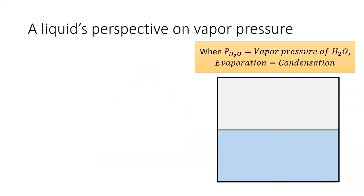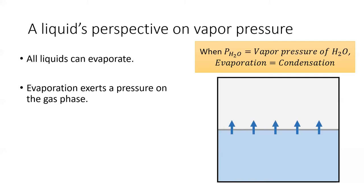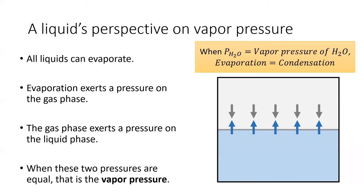From the liquid's perspective, all liquids can evaporate. Evaporation exerts a pressure on the gas phase. In turn, the evaporated gas molecules exert a pressure back on the liquid phase. When these two pressures are equal, the partial pressure of the gas is at its vapor pressure.